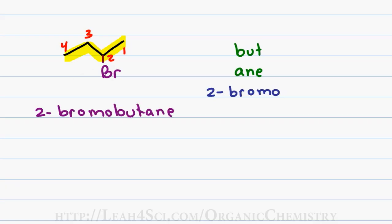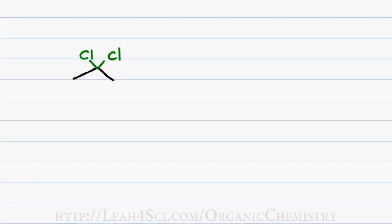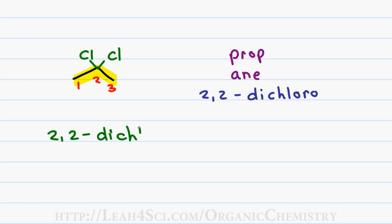Now let's look at an example where you have multiple halogens. First I identify and highlight my parent chain. I can choose to number from the right or the left given that both halogens show up in the middle. I have a total of 3 carbons for a first name of prop. Only single bonds gives me a last name of ane. The fact that I have 2 chlorine atoms showing up on carbon number 2, I have to write 2,2 to show which carbon both halogens show up at and then I have to put the prefix di before chloro to signify that I have 2 chlorine atoms. Putting the name together I get 2,2-dichloropropane.